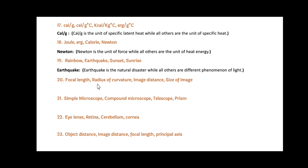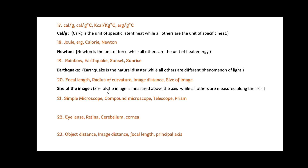Next: focal length, radius of curvature, image distance and size of the image. Friends, here size of the image is the odd one out. Since size of the image is measured above the axis, while the others — focal length, radius of curvature and image distance — are measured along the axis.